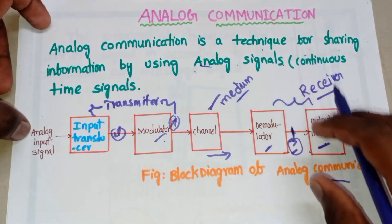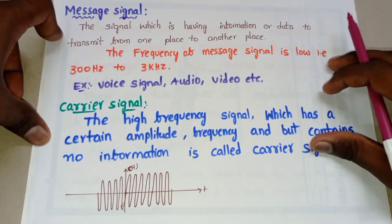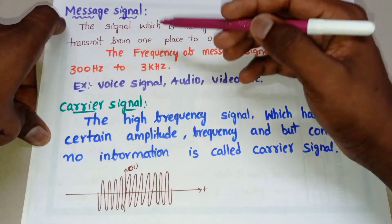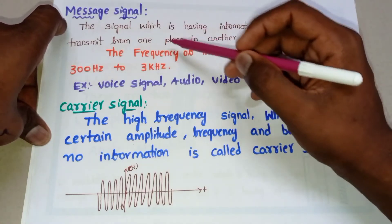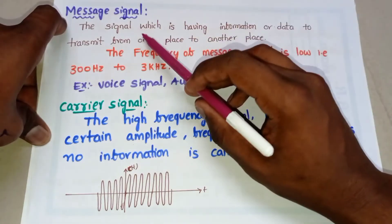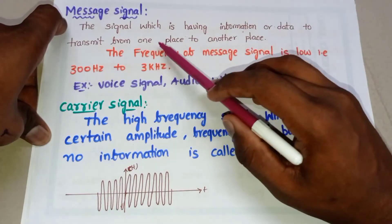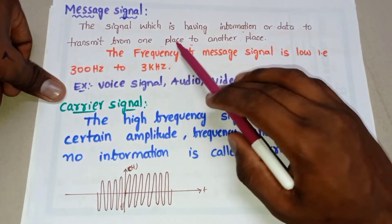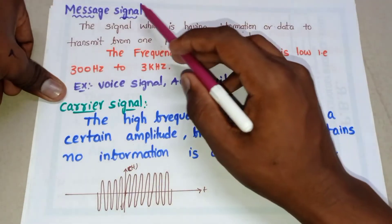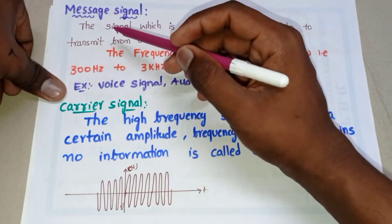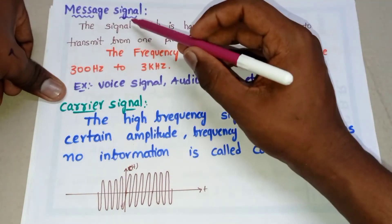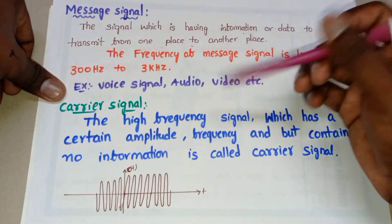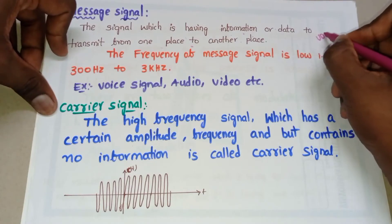In this video we will discuss message signal and carrier signal in analog communication. A message signal is, as its name says, a signal that carries the message or information we want to send. It is a signal which is having information or data to transmit from one place to another place. A message signal is a signal which contains the data or information we want to transmit, and basically the frequency of a message signal is low.